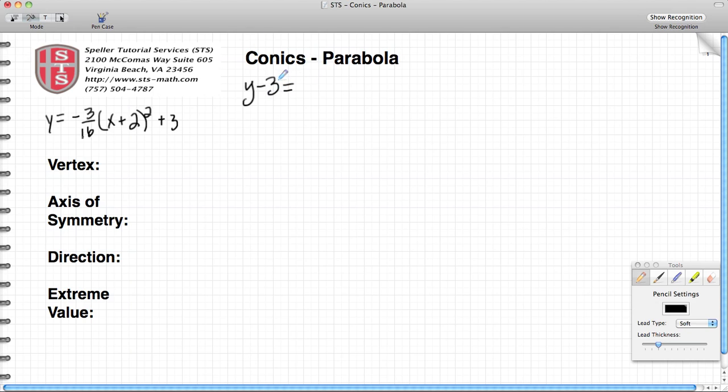So it's going to give us y minus 3 is equal to negative 3 sixteenths (x plus 2) squared. All we did was move the 3 from the right-hand side of the equal sign to the left-hand side. Now we're in a form that's easier to see what the vertex is.